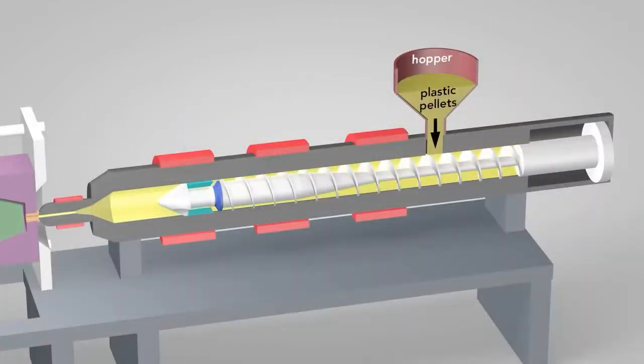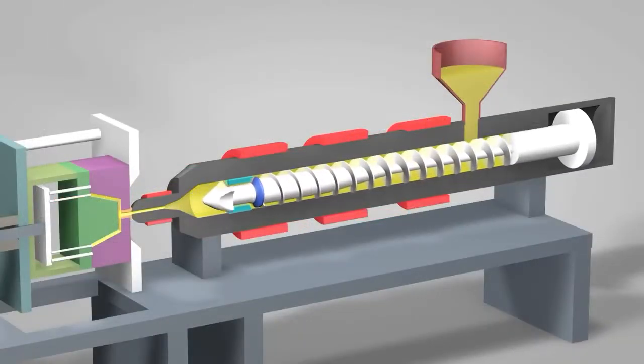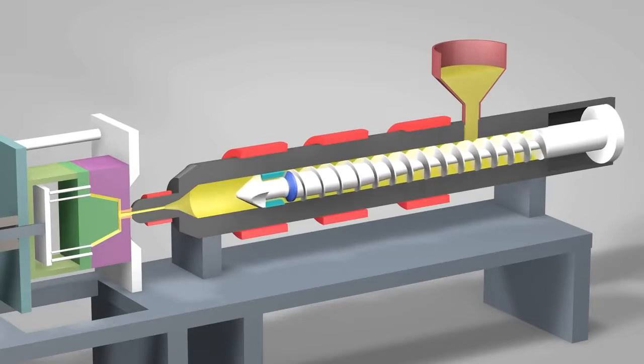Plastic pellets in the hopper feed into the barrel of the injection unit. Inside the barrel, a screw transports the pellets forward. Heater bands wrapped around the barrel warm up the plastic pellets. As the pellets are moved forward by the screw, they gradually melt and are entirely molten by the time they reach the front of the barrel.